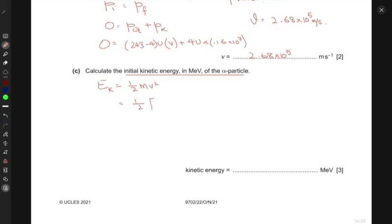We have half times mass, which for the alpha particle has mass number 4. So 4 multiplied by 1.66 × 10^-27 kg gives the mass of the alpha particle. The velocity is 1.6 × 10^7 squared. This gives 8.499 × 10^-13 joules.